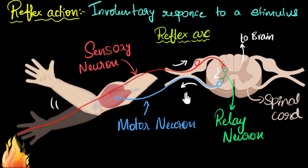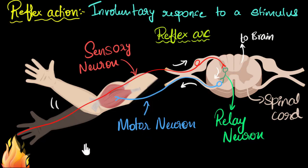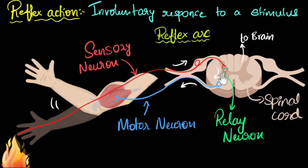Of course, some reflex arcs might have more neurons, and some can have fewer. For example, that knee reflex we saw — it turns out it only has sensory and motor neurons; it does not contain a relay neuron. So some reflex arcs can have only two neurons, but the most common ones have three neurons.